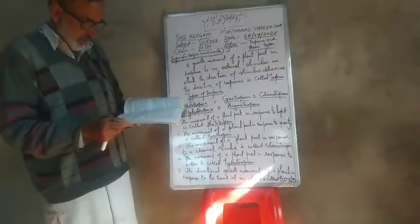Types of tropisms. There are five common types of tropisms. There are five common stimuli in the environment: light, gravity, chemical, water, and touch. These five stimuli give us five types of tropisms: phototropism, geotropism, chemotropism, hydrotropism, and thigmotropism.